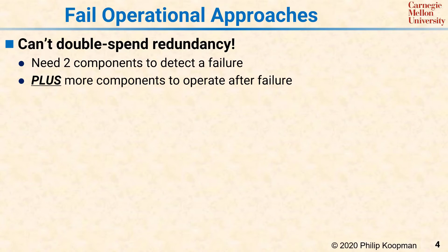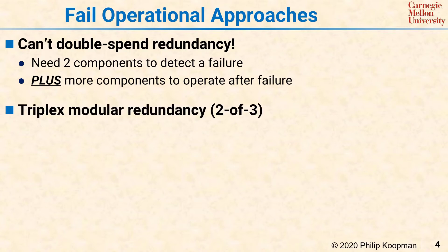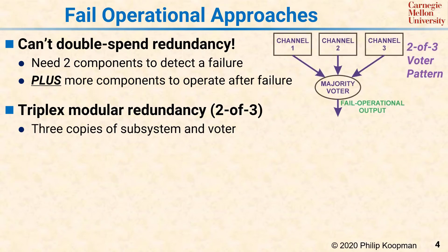One famous safety-critical computing pattern is triplex modular redundancy, sometimes called TMR, or 2 out of 3. The idea is to use three identical computers, shown here as channels 1, 2, and 3, and then add a majority voter. If you ignore the voter, you're using three computers to do the job of one, and the first two are there for fault detection, and the third is there for availability.